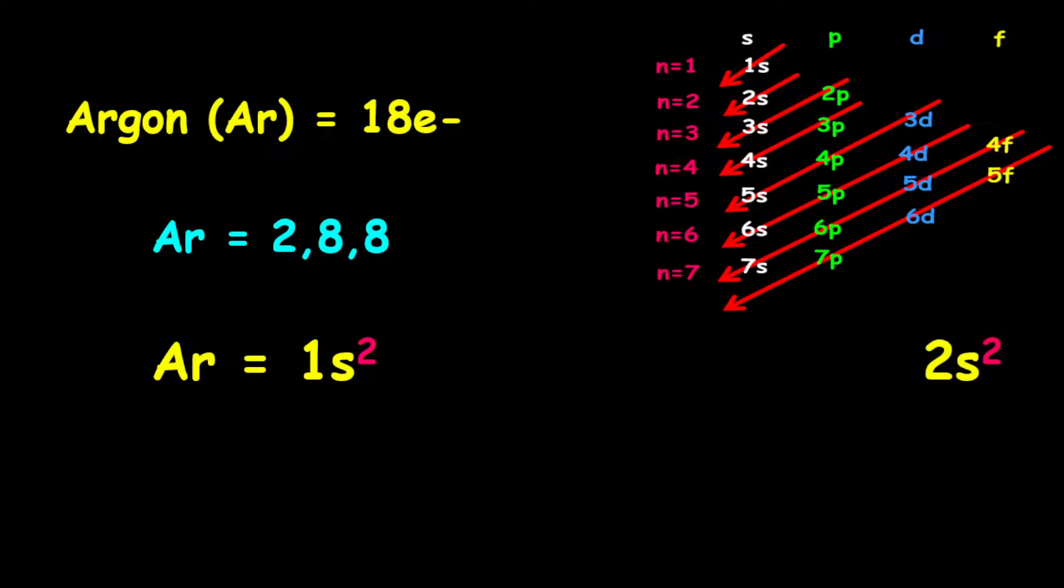it is given as 1s2, followed by 2s2, then 2p6, followed by 3s2, then 3p6.